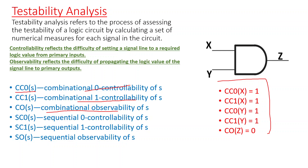We have a set of rules. The CC0 and CC1 of primary inputs are always set to one. So CC0 of X and CC1 of X are both equal to one; similarly CC0 of Y and CC1 of Y are both equal to one. The observability of the primary output is always set to zero. Controllability ranges from one to infinity — one means easily controllable, infinity means not controllable. Observability ranges from zero to one — zero means easily observable, one means not observable. For sequential circuits we have three additional measures.